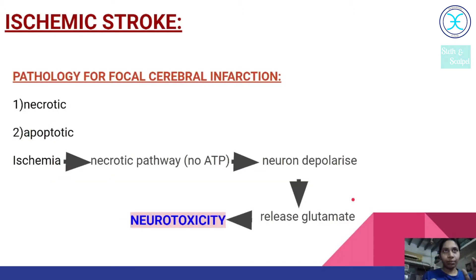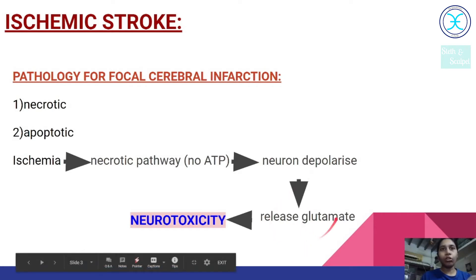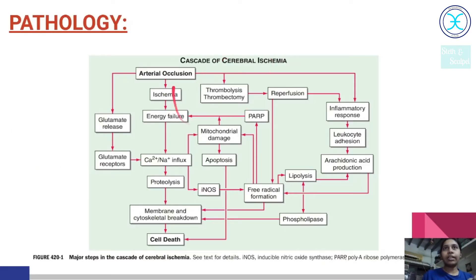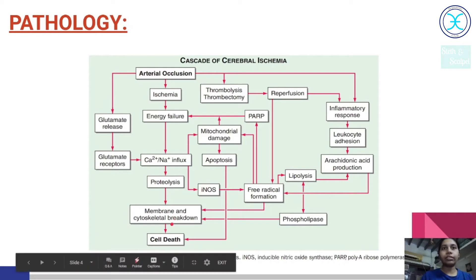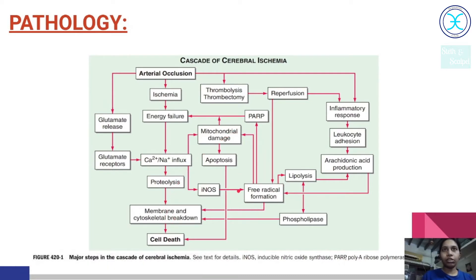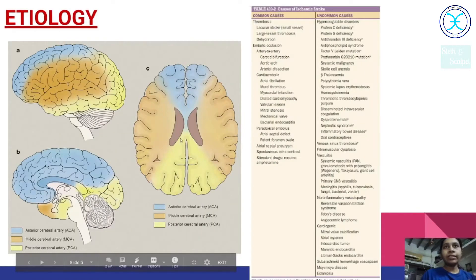Now let us see the pathology of the ischemic stroke. Basically, for any focal cerebral infarction, the pathology is of two types: necrotic or apoptotic. Apoptotic is a general programmed cell death. But here in the ischemic stroke, it causes a necrotic type of infarction because the ischemia causes necrosis which in turn leads to the depletion of ATP and causes the influx of calcium ion and depolarizes the neuron which in turn releases glutamate, and this glutamate is neurotoxic which leads to the manifestation of the ischemic stroke. See, this is the cascade of cerebral ischemia. The arterial occlusion which causes the ischemia leads to energy failure and causes calcium-sodium influx which leads to proteolysis, cytoskeletal breakdown and cell death. Here, the free radical mechanism is also involved. Mitochondrial damage is also involved.